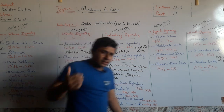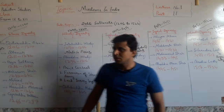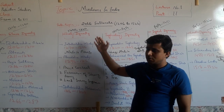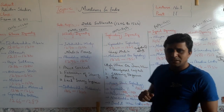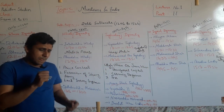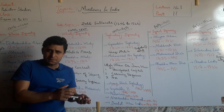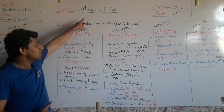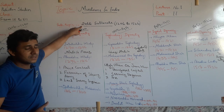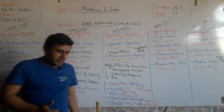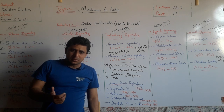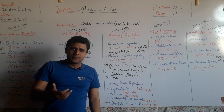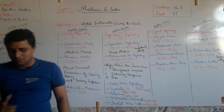So dear friends, in this lecture we discussed the different dynasties of the Delhi Sultanate — five dynasties: Slave, Khilji, Tughlaq, Sayyad, and Lodhi. This was part two of lecture number one, with the main topic being Muslims in India and the subtopic being the Delhi Sultanate. If you want to watch my next video, please like, subscribe, and share. Thank you very much. Allah Hafiz.